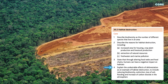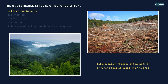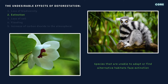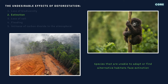Finally, you need to explain the undesirable effects of deforestation as an example of habitat destruction. Number one: forests are among the most biodiverse ecosystems on earth, providing habitats for countless plant and animal species. Deforestation disrupts these habitats, leading to a loss of biodiversity. Number two: extinction. Many plant and animal species have narrow geographical ranges and depend on specific forest ecosystems for survival. As their habitats shrink or disappear entirely, these species are pushed to the brink of extinction.